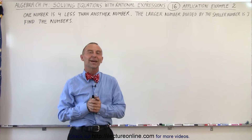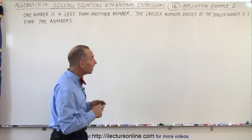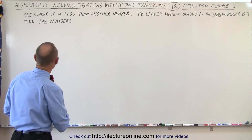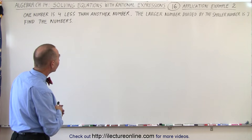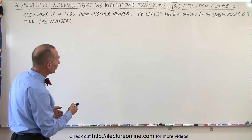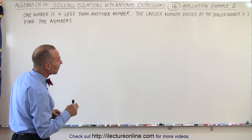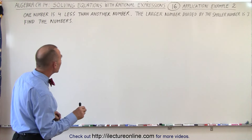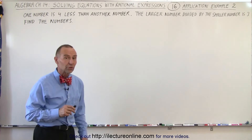Welcome to iLecterOnline. Now let's take a look at this problem. One number is 4 less than another number. The larger number divided by the smaller number is 3. Find the two numbers.